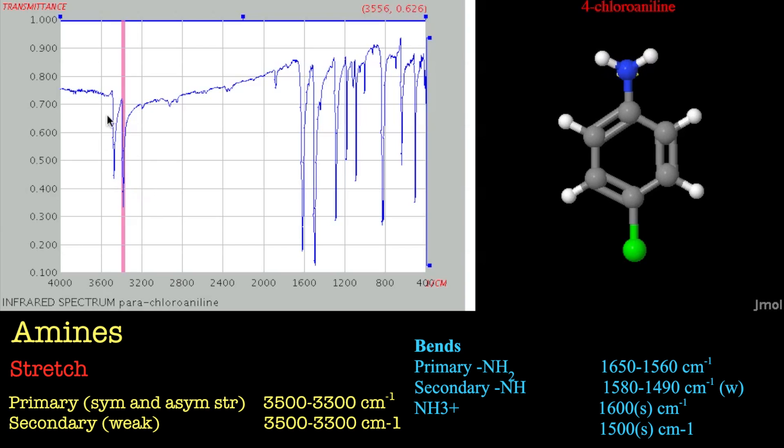And then if we move down we've got some little minor peaks. These are usually the overtones of the aromatic peaks, so we'll leave them for now.